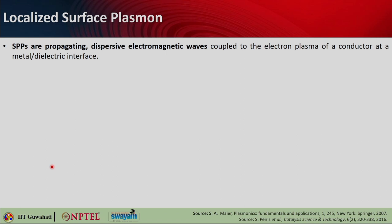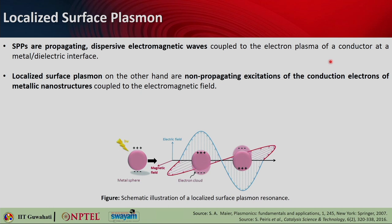Let us begin with localized surface plasmon. We have seen in the previous lecture that surface plasmons are basically propagating waves which we call SPPs — surface plasmon polaritons. These are propagating dispersive electromagnetic waves which are coupled to the electron plasma of a conductor and they propagate at the metal-dielectric interface. Localized surface plasmons, on the other hand, are non-propagating excitations of the conduction electrons on metallic nanostructures which are coupled to electromagnetic radiation.